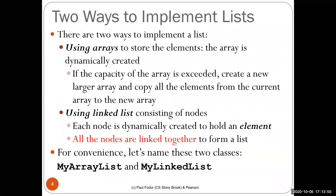There are two ways to implement lists. Using arrays, you have a dynamically created array that you extend when needed — you create an array of double the size, copy all elements from the current array to the new one, and redirect the reference to the new array. Linked lists are a collection of nodes linked together; each node is dynamically created, holds the element value, and has a pointer to the next element. There are also doubly linked lists, which have two pointers — one to the previous element and one to the next.